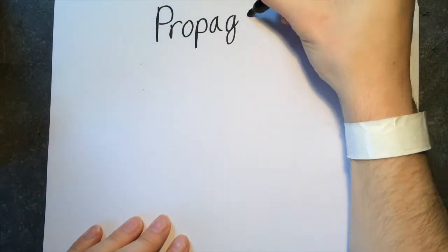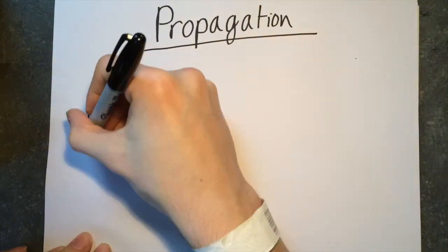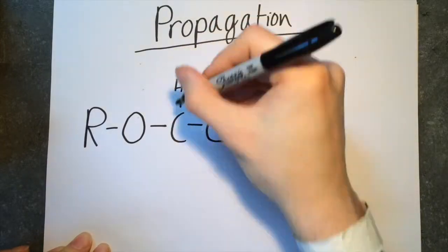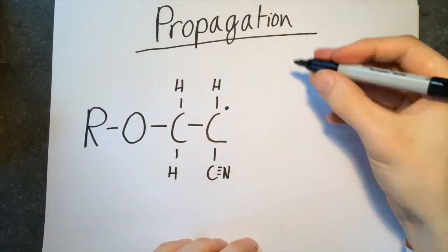Propagation: the acrylonitrile now with a free radical on it reacts with another acrylonitrile monomer without a free radical, forming a long chain.